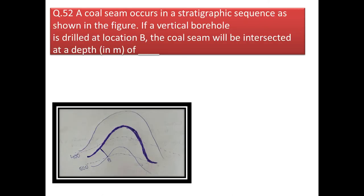Next question: a coal seam occurs in a stratigraphic sequence. If a vertical borehole is drilled at location B (contour value 500), the coal seam will be intersected at a depth of? Drilling vertically from 500, the next contour value that touches the coal seam is 400. So the depth at which the coal seam will be intersected is 100 meters.